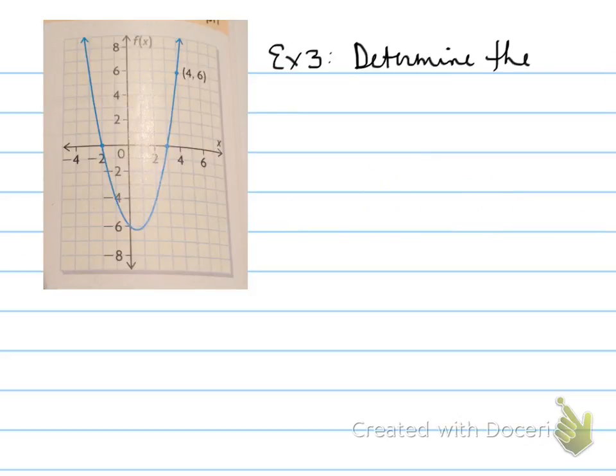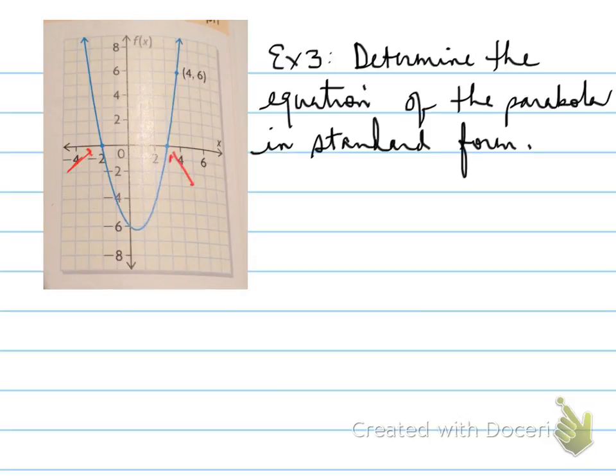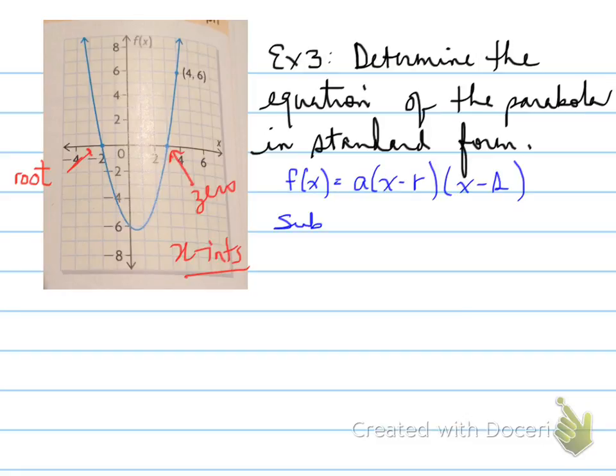Example number three. Determine the equation of the parabola in standard form. Let's look more importantly at this parabola. So it's a random parabola given, but specifically you're given this value and this value. Do you see those values? What are those? Oh, that's right. You should be thinking, those are my zeros. And I can see that there's dots on them. Those zeros, the roots or the x-intercepts, are important features for the factored form of an equation. So we take the equation f(x) equals a times x minus r times x minus s, and we're going to sub in r equals negative 2 and s equals 3.